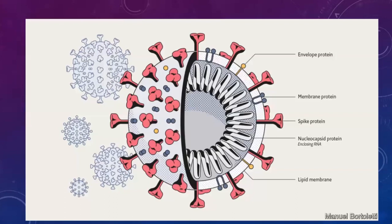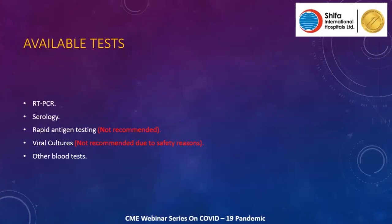One important protein is the spike protein, also known as the S protein, which attaches to the ACE2 receptors present on alveolar type 2 pneumocytes. Once attached, the virus introduces itself into the cell. Available tests for diagnosis include RT-PCR (reverse transcriptase polymerase chain reaction), serology assays, and rapid antigen testing, which is not recommended. Viral culture carries significant safety risks and is also not recommended.